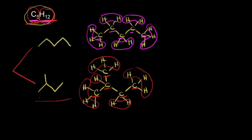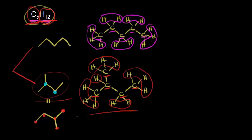To draw another structural isomer, some students might say we could start with four carbons again, and this time show a branch off of a different carbon. But actually these are just two different ways to represent the same molecule. If you analyze that second structure, the connections are the same — we have a CH bonded to a CH3, bonded to another CH3, and bonded to a CH2, which is bonded to a CH3. That's the same structure. So it looks like a different drawing, but it's just two ways to represent the same molecule.